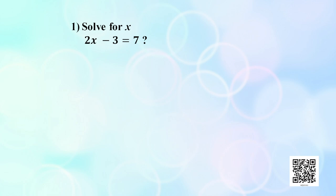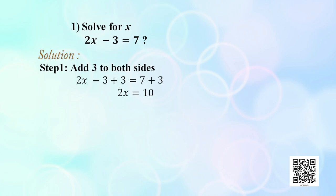So let us take the given example: solve for x, 2x − 3 = 7. To find the solution we follow the following steps. Step 1: for the given expression, we have to add 3 on both sides. Remember, whatever basic operations we perform — addition, subtraction, multiplication, or division — on both sides, the balance of the equation is not disturbed.